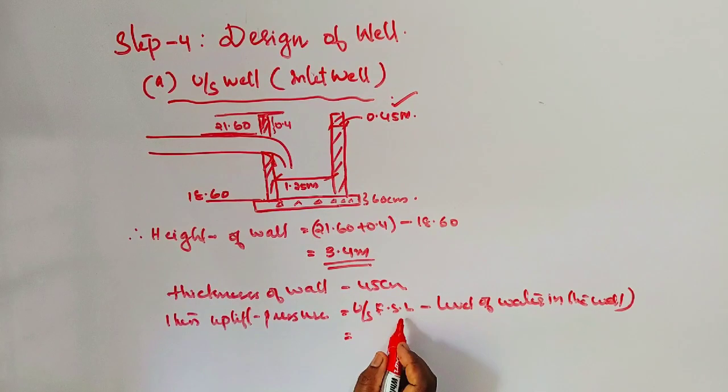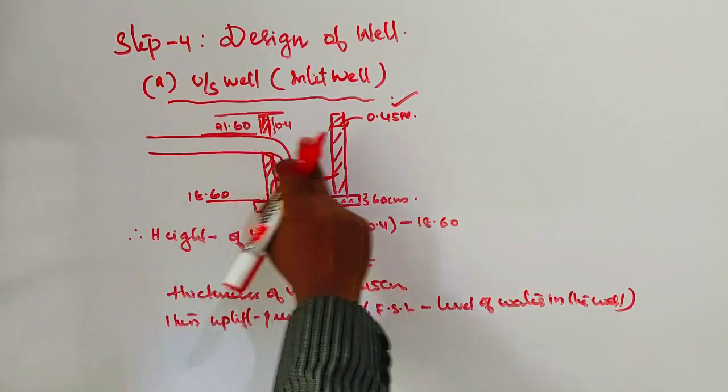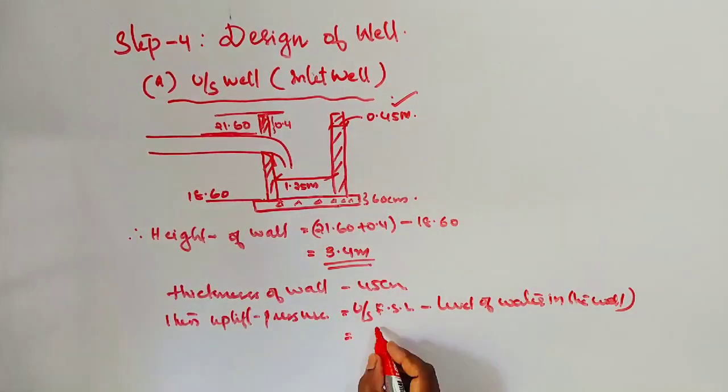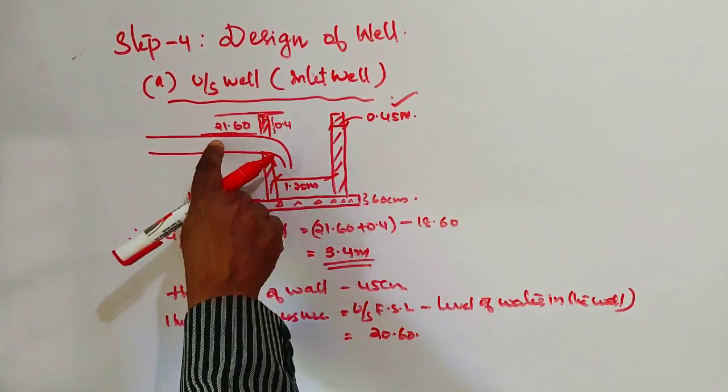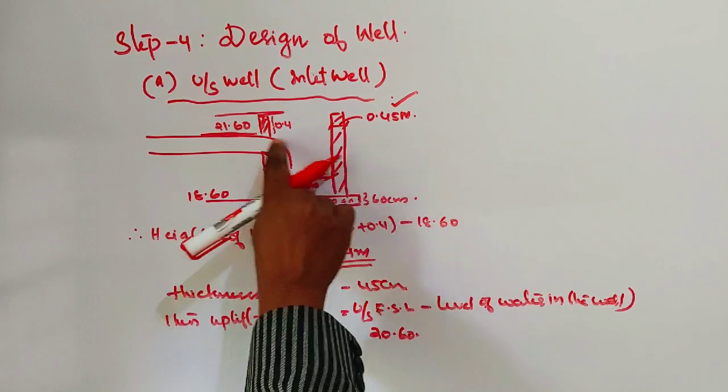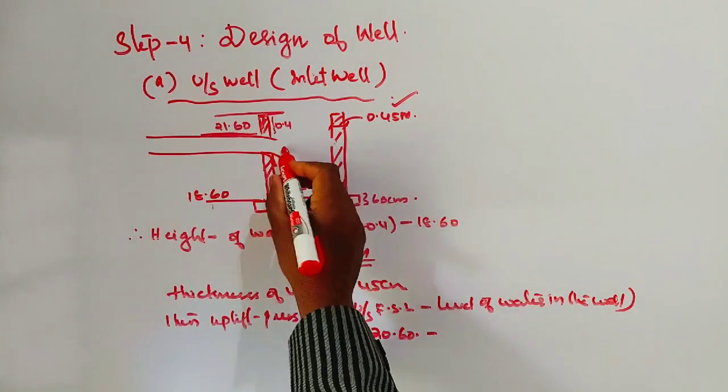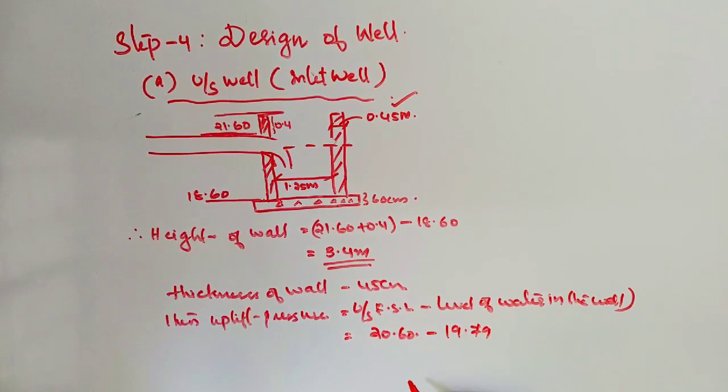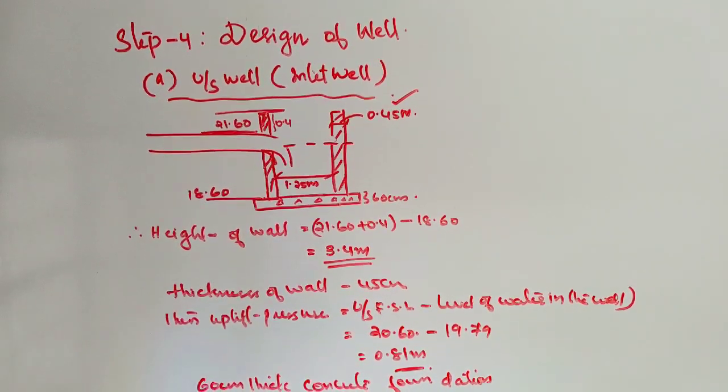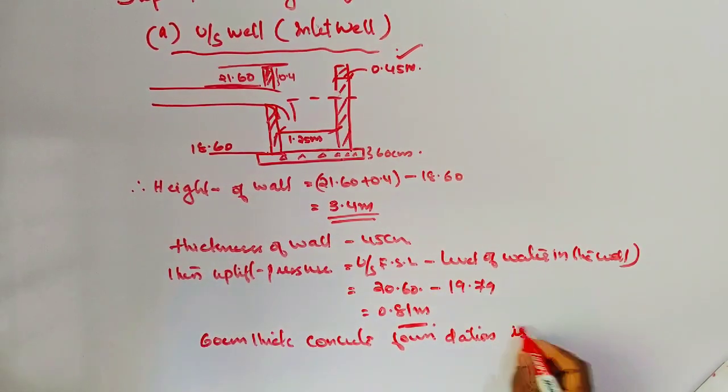Full supply level is 20.6 minus level of water in the inlet well, which we calculated as 19.79. The difference is 0.81 meters. So we need to provide 60 centimeter thick concrete foundation to account for the uplift pressure.